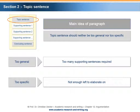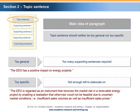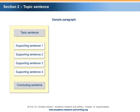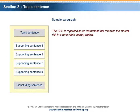An example of a topic sentence that might be too general: 'The EEG has a positive impact on energy projects.' A topic sentence that might be too specific is, for example: 'The EEG is regarded as an instrument that removes the market risk in a renewable energy project by enabling a realization that otherwise would not be feasible due to uncertain market conditions, that is, insufficient sales volumes as well as insufficient sales prices.' A well-balanced introductory topic sentence could be: 'The EEG is regarded as an instrument that removes the market risk in a renewable energy project.' The second part of the paragraph will consist of the supporting sentences.